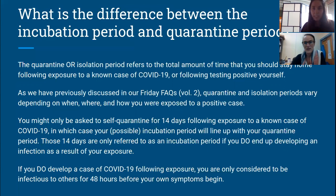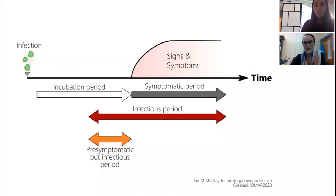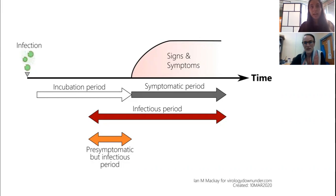The important takeaway from the incubation period: if you develop a case of COVID-19 following an exposure, you are only considered to be infectious to others 48 hours after your symptoms begin. So if someone has an exposure to a positive COVID-19 case and worked that day without knowing, we don't need to notify the people they worked with, because that's still within the incubation period. The viral load hasn't increased enough in your body for you to be shedding the virus to other people.